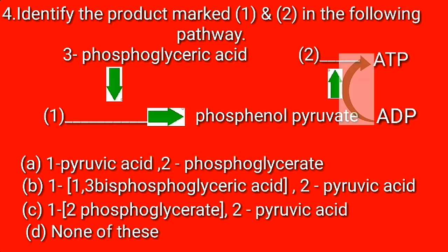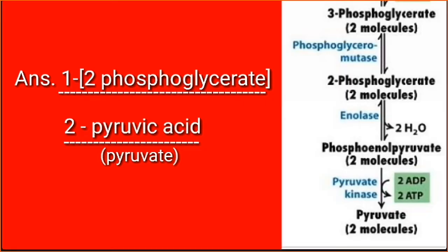Identify the products marked by 1 and 2 in the following pathway. Answer: 1. 2-phosphoglycerate. 2. Pyruvic Acid.